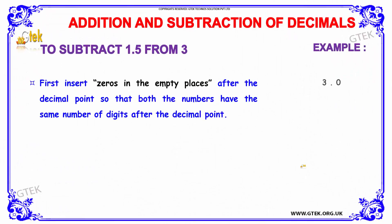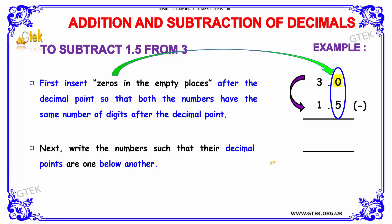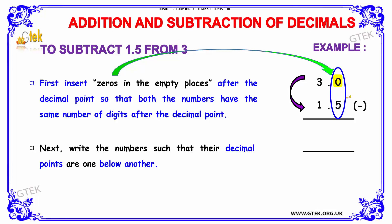Now let us move on to the examples of subtraction in terms of decimals. We need to subtract 1.5 from 3. The word 'from' indicates the second term comes first, followed by the previous term. Since 3 is a whole number, we have inserted 0 to make it equivalent in decimal form. We insert 0 in the empty place and place the decimal point, so both numbers are 3.0 and 1.5, having the same number of digits after the decimal point. We then write the numbers such that the decimal points are one below another.